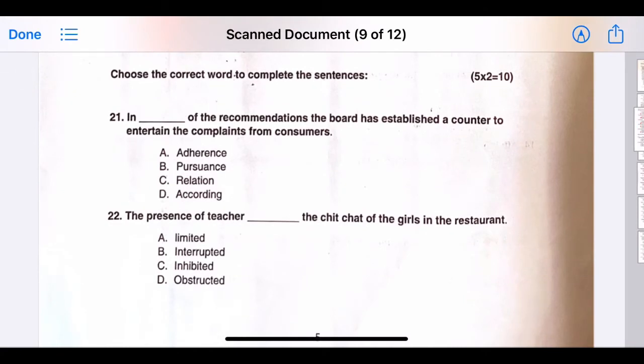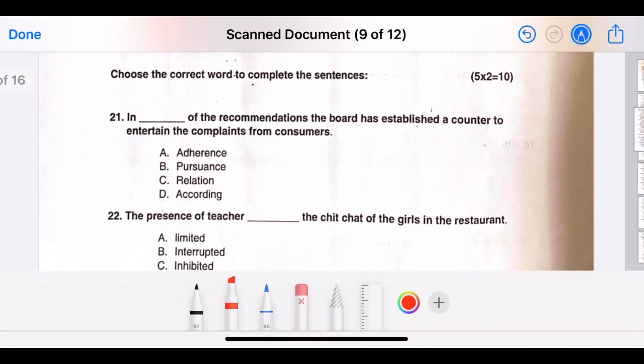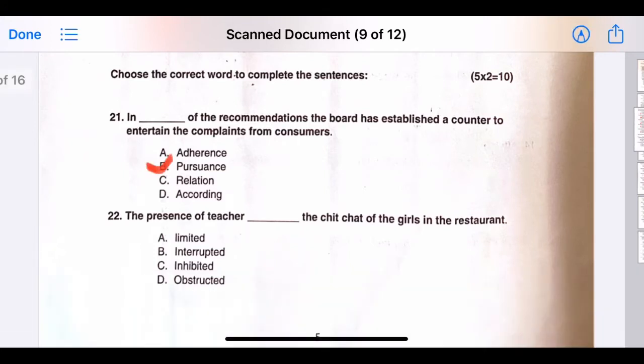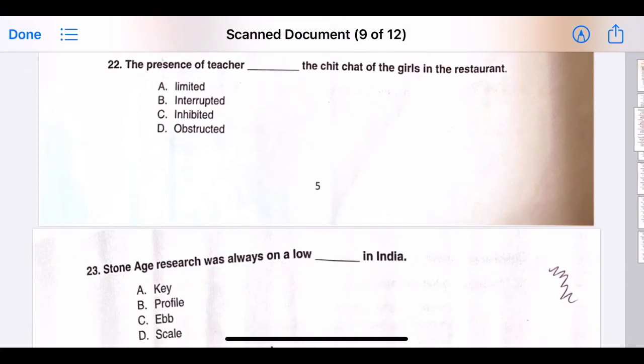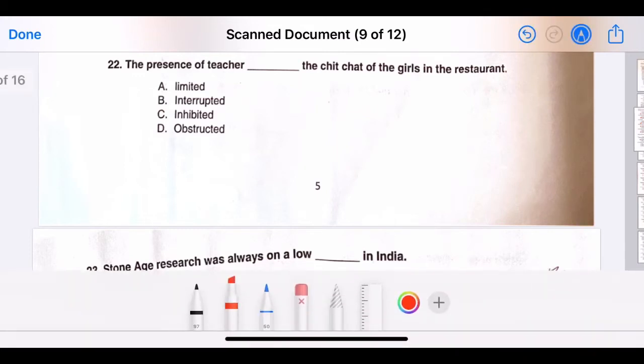Choose the correct word to complete the sentences. Twenty-one, in blank of the recommendation, the board has established a counter to entertain the complaints from consumers. The correct answer is option B, pursuance. Twenty-two, the presence of teacher blank the chitchat of the girls in the restaurant. The correct answer is option C, inhibited.